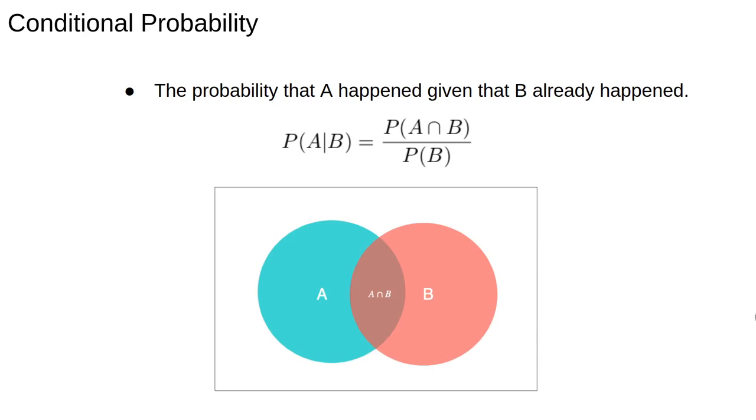To understand this formula, let's have another look at the Venn diagram. Knowing that B happened restricts the sample space from all of S, which is the whole box, down to just B, the orange circle. Then the probability of A in this smaller space is the number of ways A can occur in the space defined by B. Hopefully it's obvious that this space is just A intersection B.